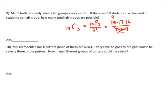So 3 times 17 times 16 is 816. So there are 816 different groups that Mr. Schuth could choose to make, and so that's just of all the different possibilities. So lots and lots of groups.